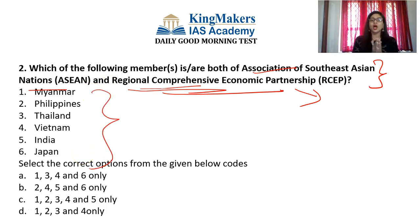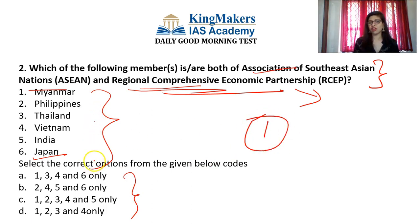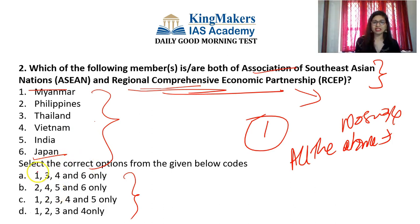Using the elimination technique: option A is 1, 3, 4, 6; option B is 2, 4, 5, 6; option C is 1, 2, 3, 4, 5; option D is 1, 2, 3, 4. Almost every option contains option 1, so Myanmar is likely there. Now, option 5 is India — do you think India is a member of ASEAN? If India is not included, then B and C can be eliminated. And if India is not a member, Japan likely isn't either, since both are outside the ASEAN bloc.